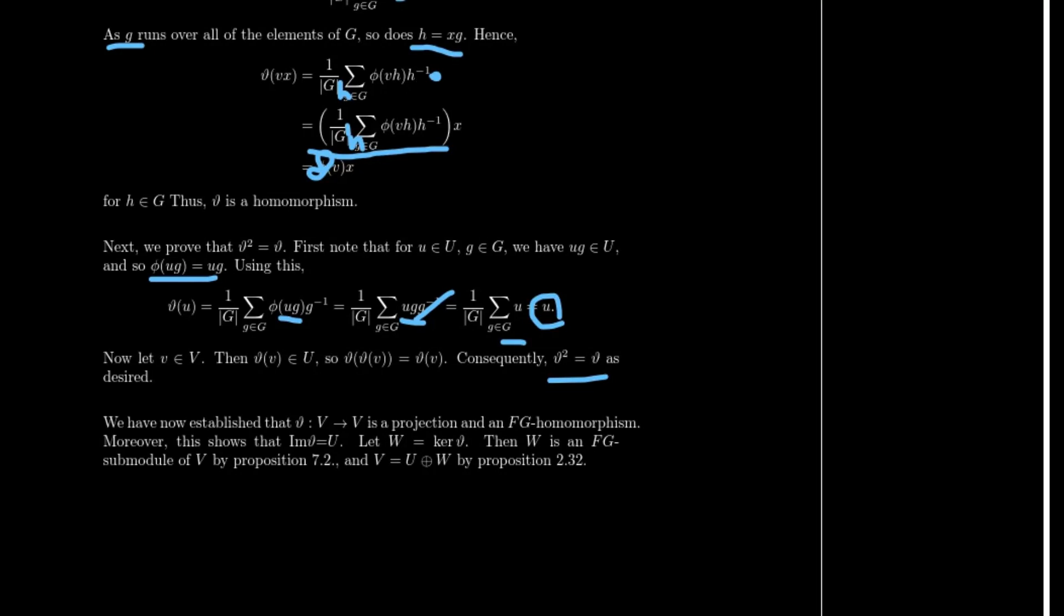All we have left is a little bit of housekeeping. θ is a projection of V to V and also an FG homomorphism. We've also shown that image of θ equals U. Now, instead of W₀, just let W be the kernel of θ, then W is also going to be an FG submodule by proposition 7.2, which means that V is going to be a direct sum of U and W by proposition 2.32.